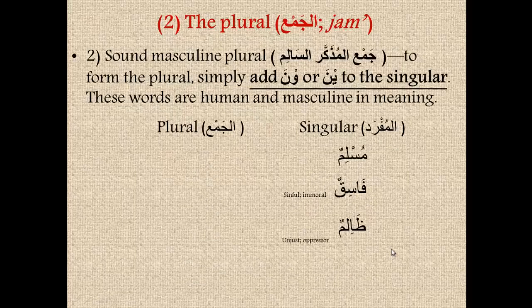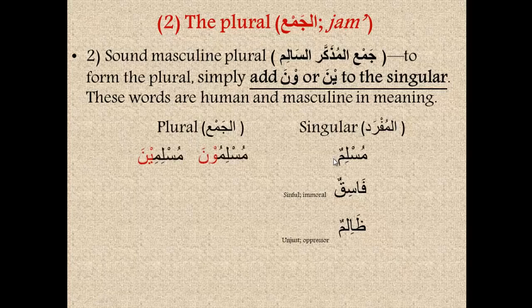Next, we have category number two: the sound masculine plural, or jam'a al-mudhakar al-salim. To form this type of plural, simply add una or ina to the singular. These words are human and masculine in meaning. For example, muslimun — one male believer of the Islamic faith. To make the plural, we add una or ina to the end, so we get muslimuna or muslimina. How are these words different? They both mean Muslims; the difference is in the case ending, which we will not worry about for now. Just learn the two forms: muslimuna and muslimina — both mean Muslims.